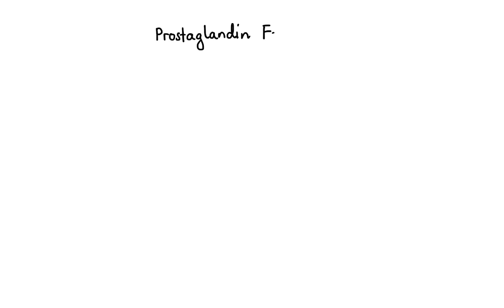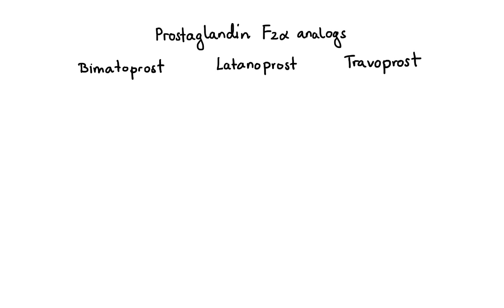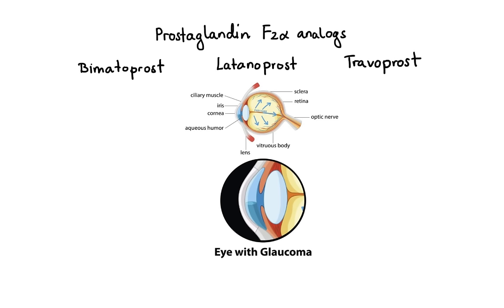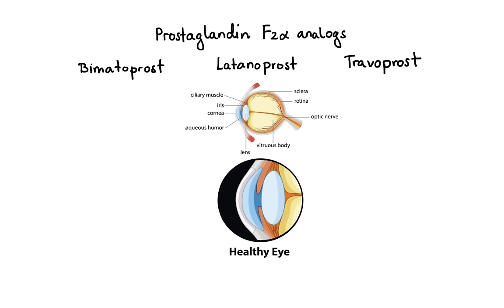Now let's move on to prostaglandin F2-alpha analogs. Examples of agents in this group are bimatoprost, latanoprost, and travoprost. These agents are used ophthalmically for treatment of open-angle glaucoma. They work by increasing the outflow of aqueous fluid from the eye, thus lowering intraocular pressure. Although latanoprost and travoprost accomplish that by interacting with prostaglandin F-receptors located throughout the eye, bimatoprost is thought to have a different mechanism of action, which is currently unknown. Among the unique side effects of bimatoprost is elongation and darkening of the eyelashes, which makes it useful in treatment of eyelash hypotrichosis.